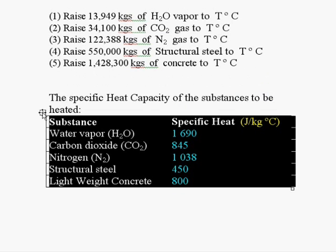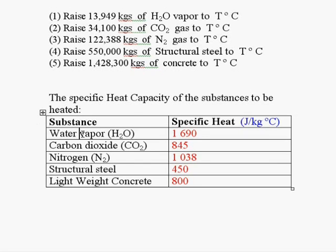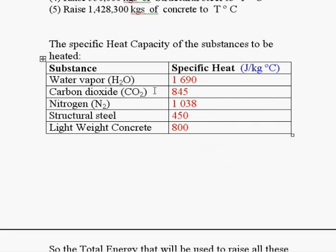This table shows the heat capacity of the substances to be heated. Here are the substances, and here is the heat capacity in joules per kilogram Celsius.